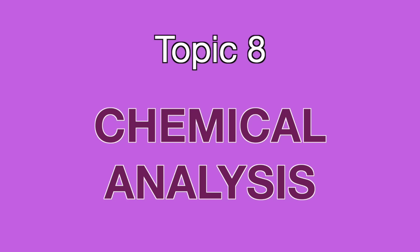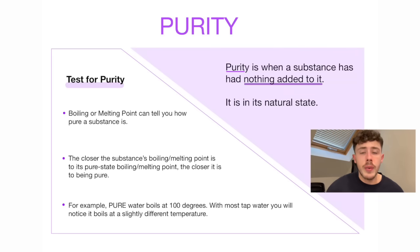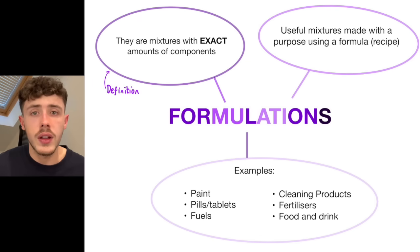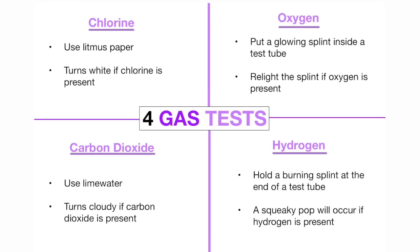Moving on to topic 8, which is chemical analysis. You need to know about purity and what is meant by a pure substance. Next we have formulations — these are effectively a recipe that can be used in chemistry to form different mixtures. Here we have a really important one: four different gas tests that you need to know — the tests for chlorine, oxygen, hydrogen, and carbon dioxide.